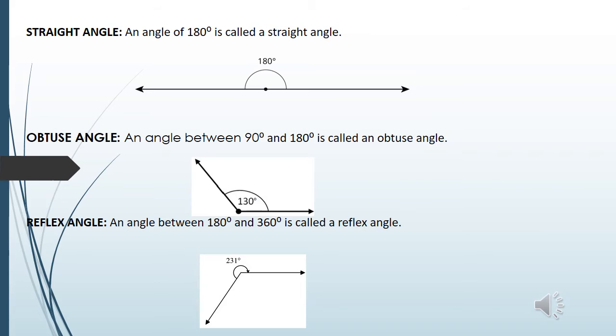Straight angle: an angle of 180 degrees is called a straight angle.